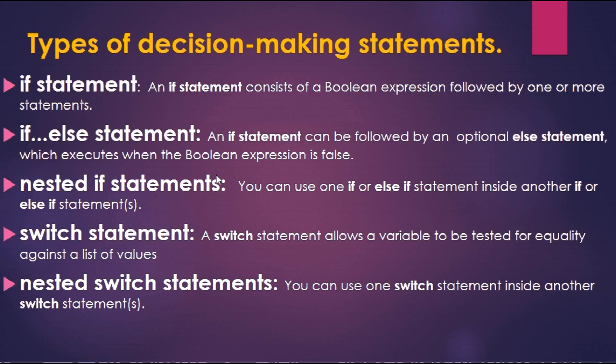The first is the 'if' statement. An if statement consists of a boolean expression followed by one or more statements. If you want a statement to execute only when a condition is satisfied — for example, if x equals 10 — you put 'if (x == 10)' and then the statement. That statement will only be executed by the compiler if the condition is true.